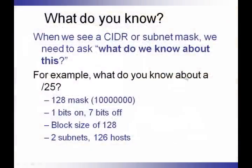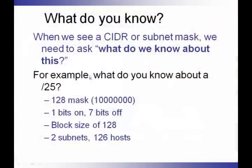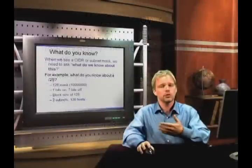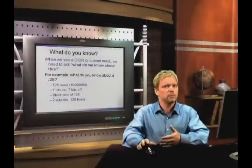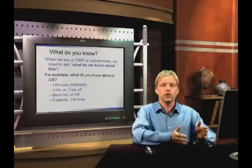So if we see a slash notation, that's what we need to know. We need to be able to turn it into a mask, how many bits, the block size, and how many subnets and hosts. We're going to memorize this — everything we've learned so far comes down to this one section. For example, what do you know about a slash 25? We're talking about a Class C at this point, but when we get to Class B and Class A, we get to use the same information again — it does not change. So it's important to memorize this.